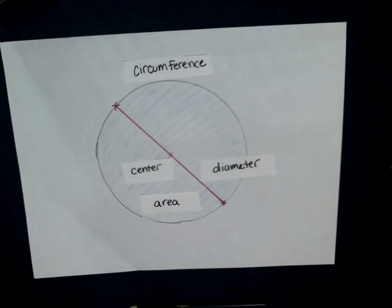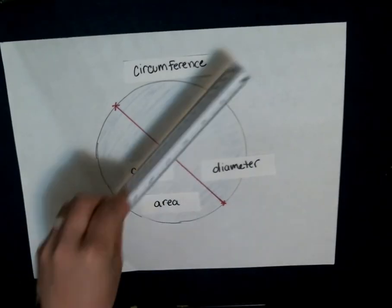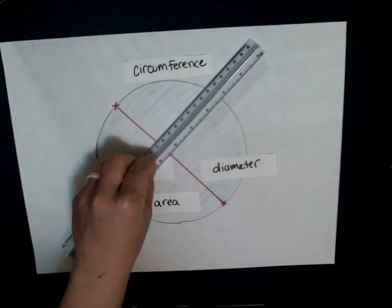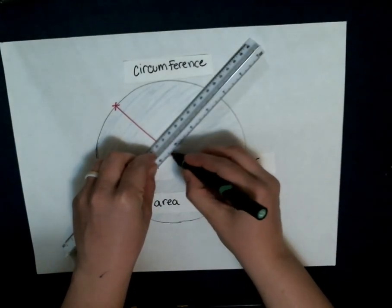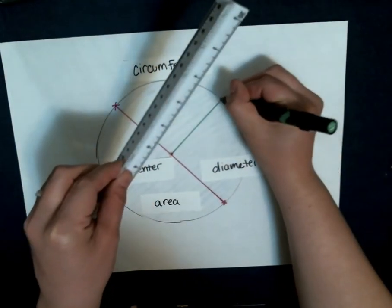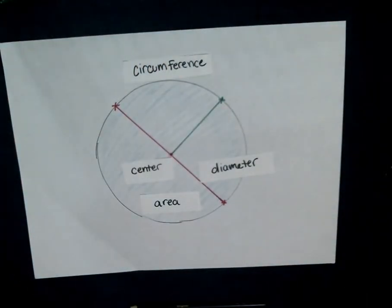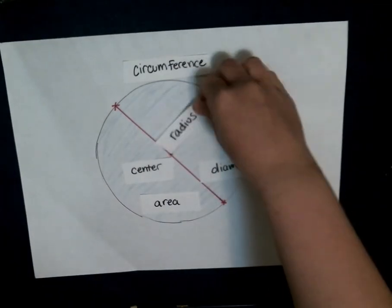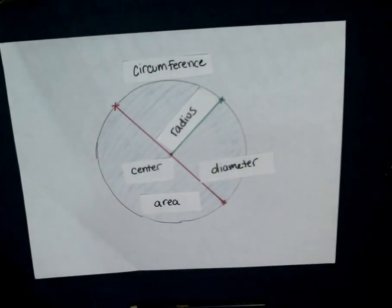I want to draw one more special line for you. So this is going to be a line that comes from the center of the circle to one point on the circumference. Do you notice these are straight lines too? Yes? Cool.